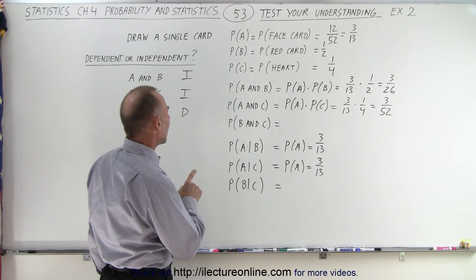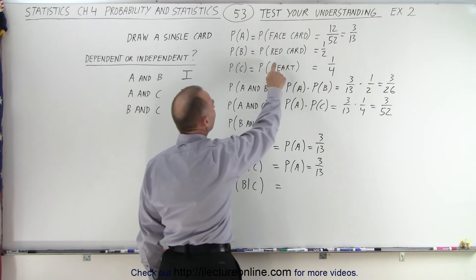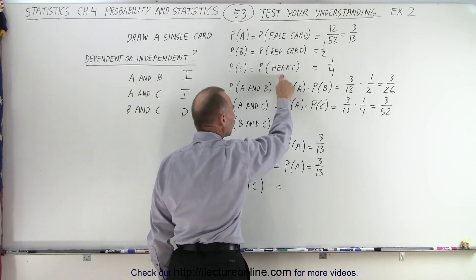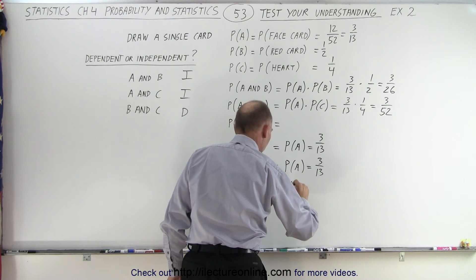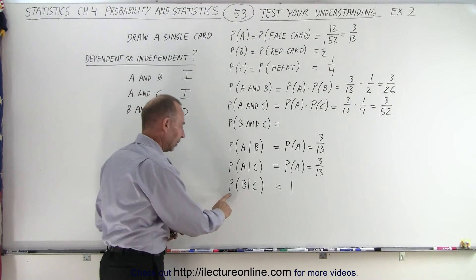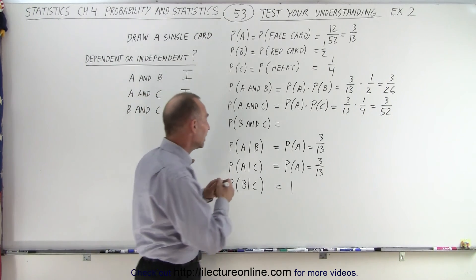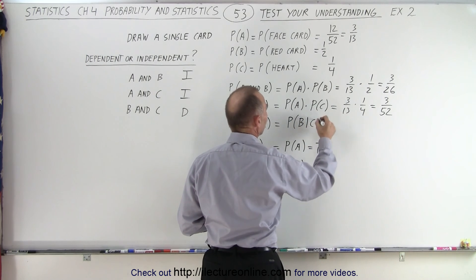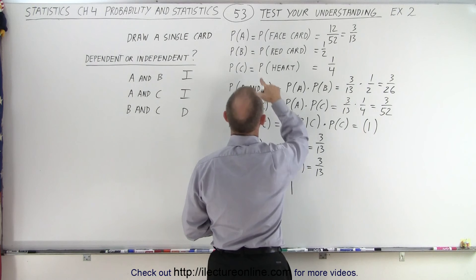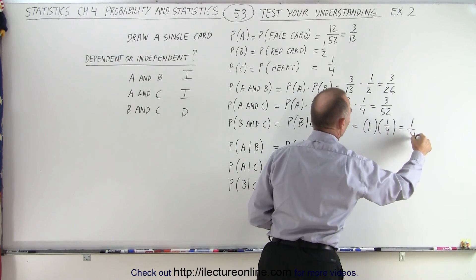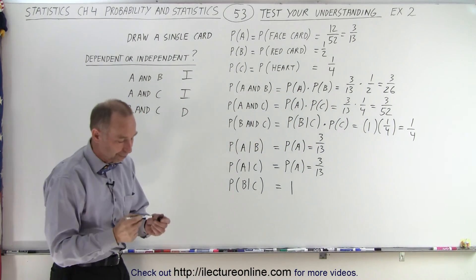Now the third conditional: we're trying to find the probability that B will occur given that C has already occurred. The probability of B is the probability that we draw a red card. But hearts are a red card, which means that once I know I pulled a heart, I know I pulled a red card — so therefore this must equal 1. Now that we've determined P(B|C) = 1, we can figure out P(B and C), which equals P(B|C) times P(C) — that is 1 times 1 quarter, which equals 1 over 4. So the probability that B and C will occur is 1 out of 4. And that is how it's done.